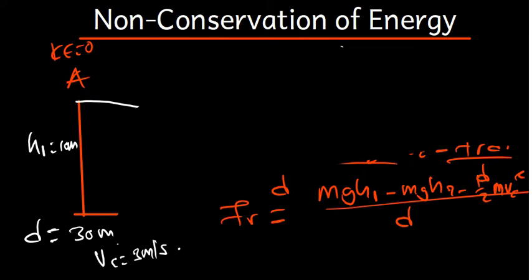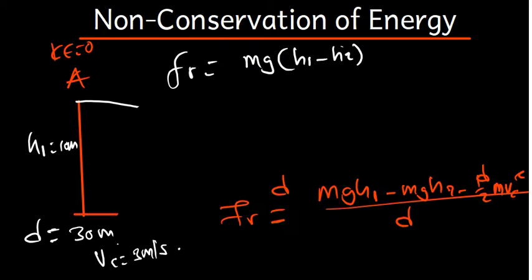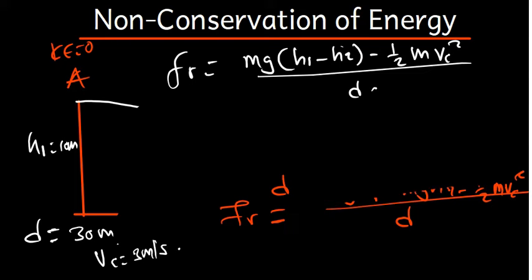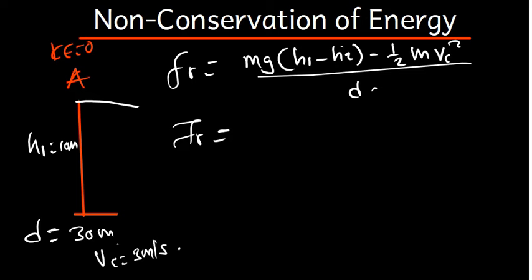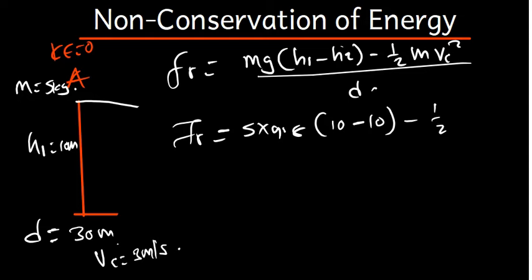Let's plug in the values. We can factor out: friction force equals M times G times (H1 minus H2) minus half MV_C squared, divided by D. The mass is 5 kg, g is 9.8. H1 minus H2 is 10 minus 5, which is 5. The velocity is 3 m/s and the distance is 30 m. So we have 5 times 9.8 times 5, minus 0.5 times 5 times 3 squared, all divided by 30.